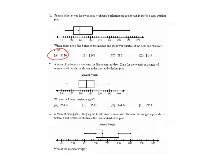Question two, a team of biologists is studying the European red deer. Data for the weight in pounds of several adult females is shown in the box and whisker plot below. What is the lower quartile weight? What we're looking for is this point right here. And again, it looks like we're counting by five. So if this point is 300, this would be 295, which is choice D.